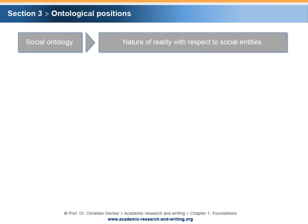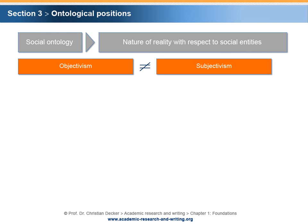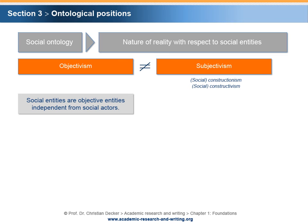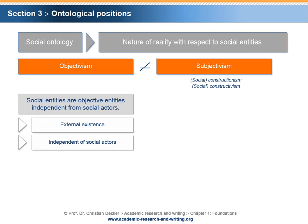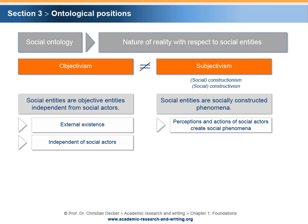There are two competing major philosophical positions that address social ontology. Objectivism postulates that social entities are objective entities independent from social actors — social entities exist as external phenomena independent of social actors. In contradiction, subjectivism postulates that social entities are socially constructed phenomena. Perceptions and actions of social actors create social phenomena, and social actions constantly change social phenomena.